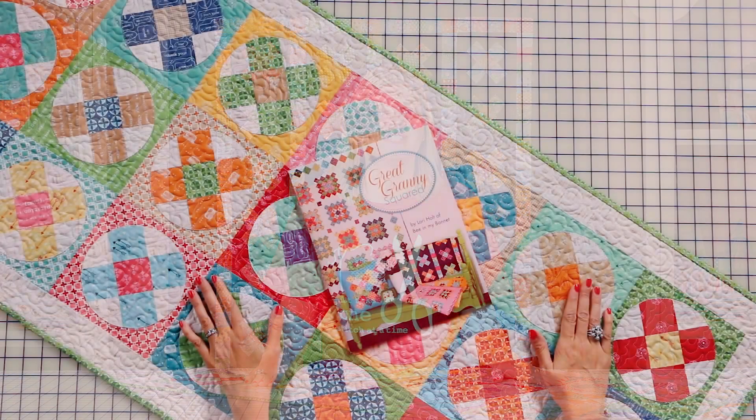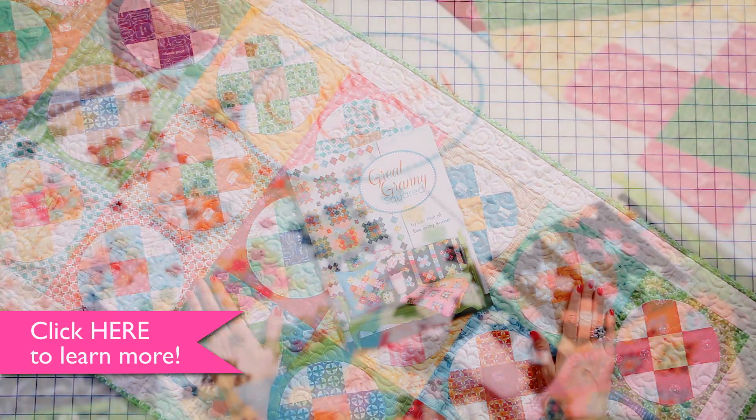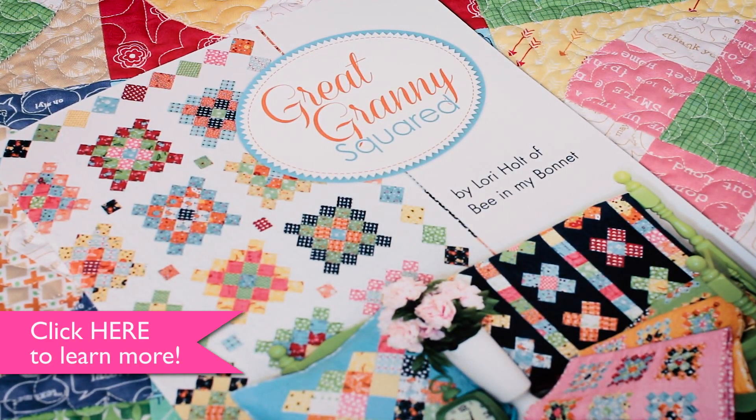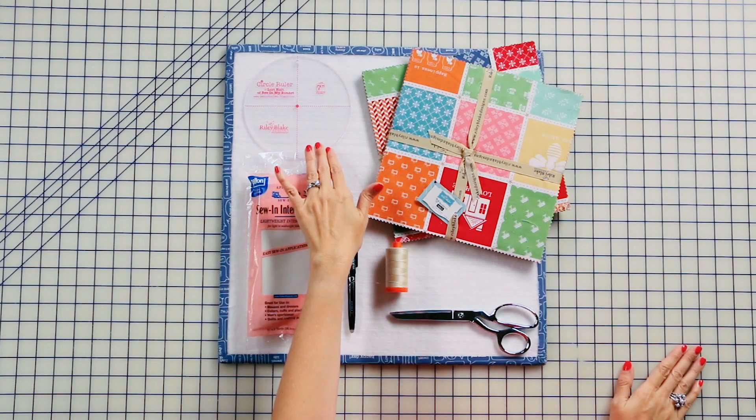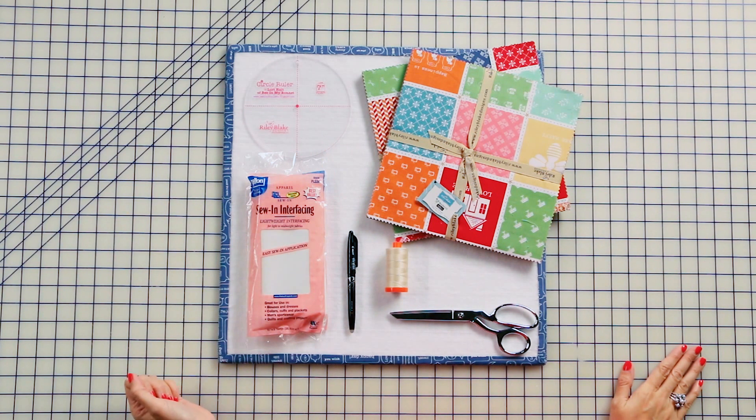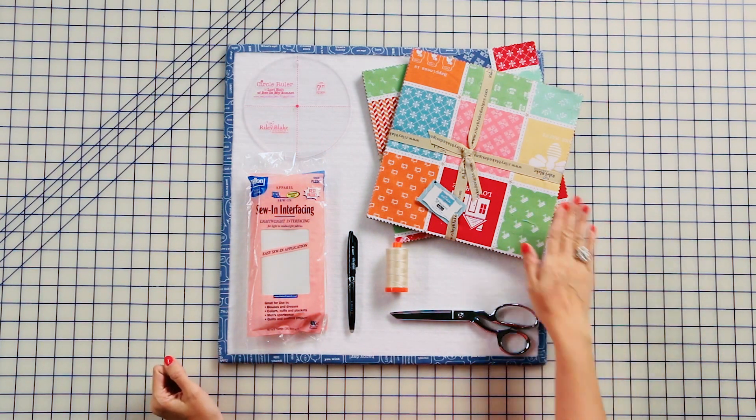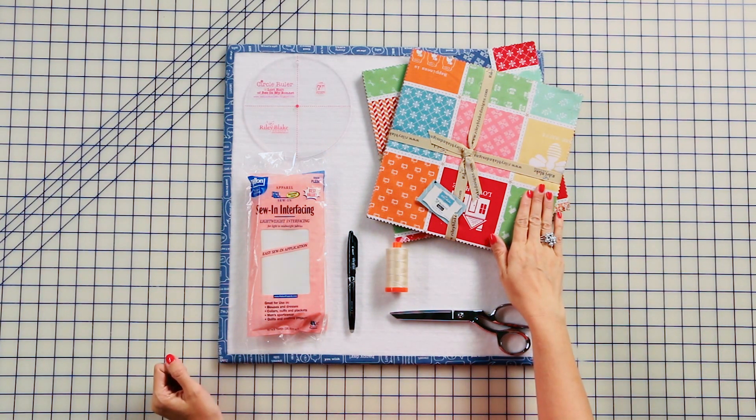If you want to see what other bloggers are doing with her book, visit fatquartershop.com/great-granny-sew-along. To make this project, you need Lori Holt's 6-inch circle ruler. You also need a background fabric and two Riley Blake Modern Mini 10-inch stackers.